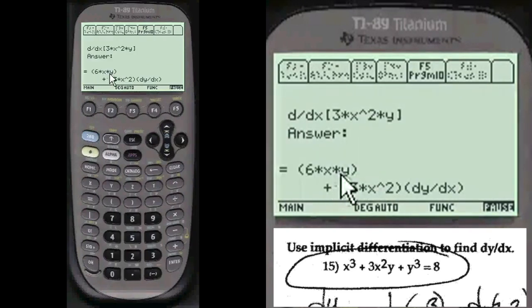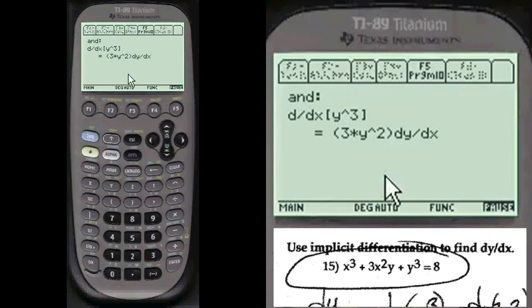And here's the answer: 6xy plus this, d/dx of course. And then y cubed, etc. Mark everything down in your paper. And then the other side, d/dx of 8 is equal to 0.